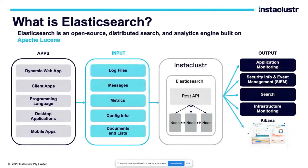So what is Elasticsearch? Elasticsearch is an open source search and analytics engine built on Apache Lucene. It is also referred to as a distributed document store, and sometimes called an in-house Google. You can search very big data very fast — that's the key advantage of Elasticsearch.